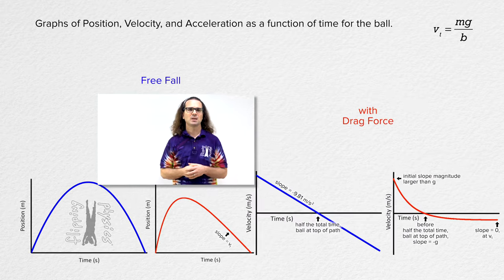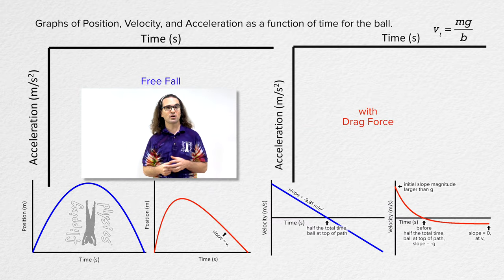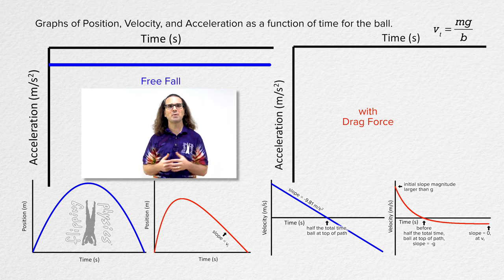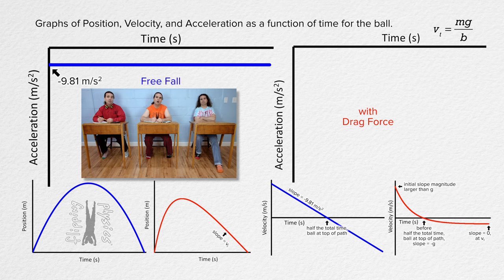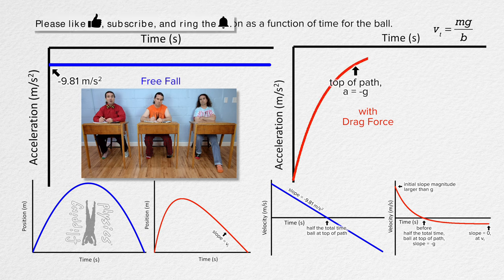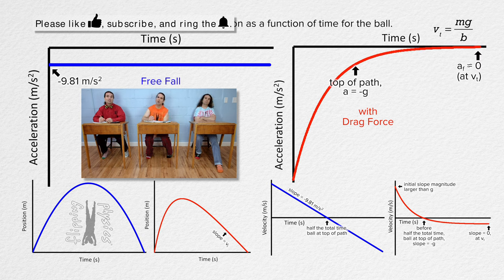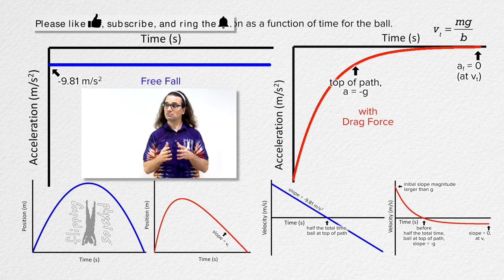Lastly, let's look at acceleration as a function of time. In freefall, the acceleration is constant at roughly negative 9.81 meters per second squared — a horizontal line with zero slope. When we include a drag force, the initial acceleration has a magnitude larger than 9.81 m/s², meaning it is more negative than negative g. At the top of its path, the ball has an acceleration equal to negative g. The final acceleration approaches zero because the ball reaches terminal velocity. Thank you very much for learning with me today.